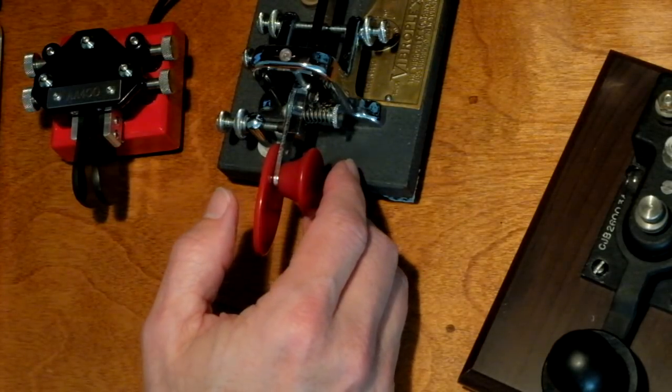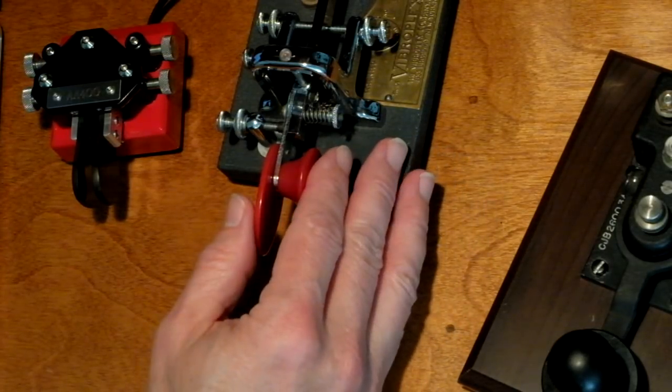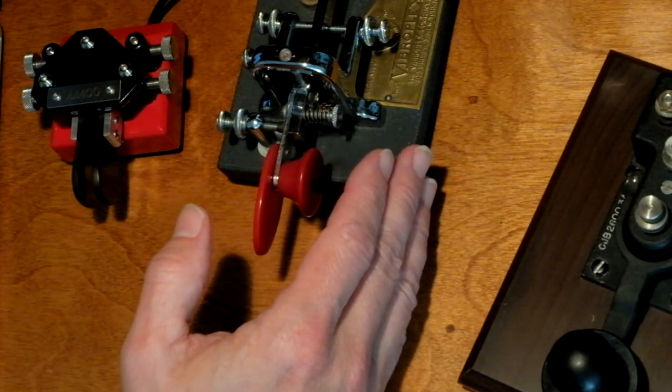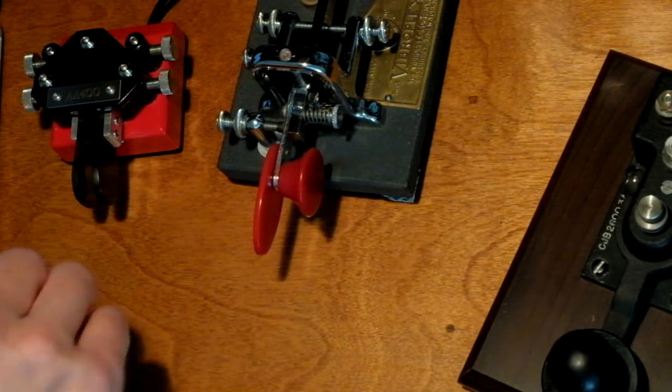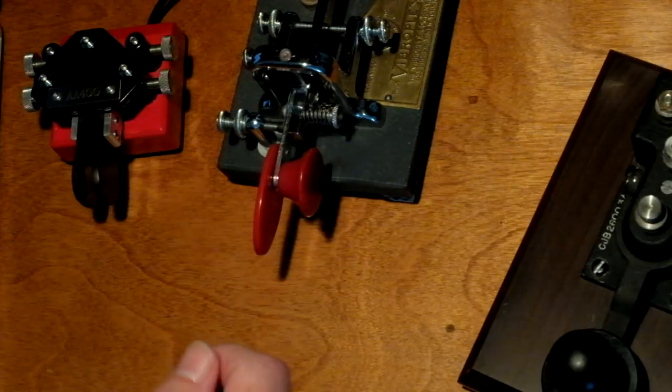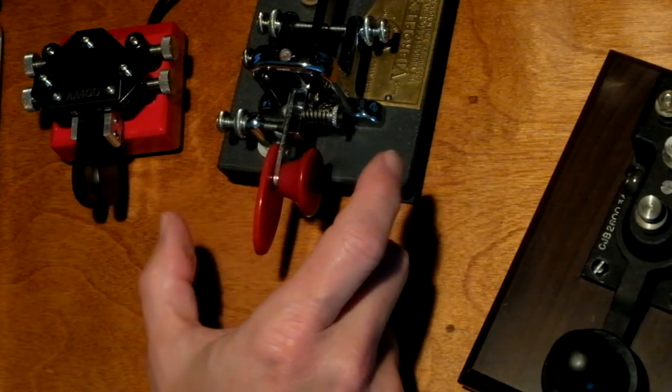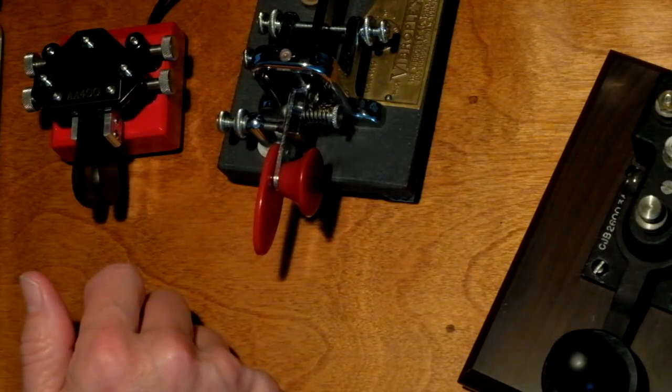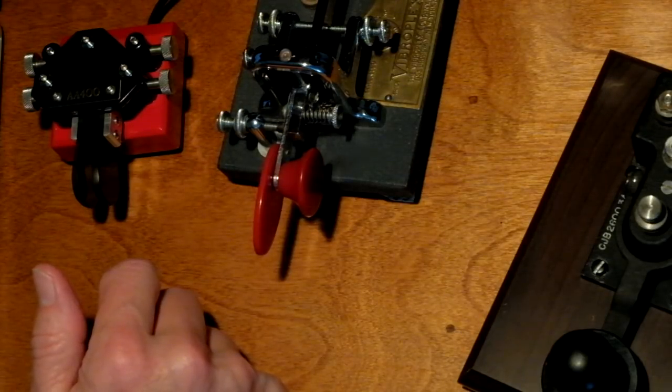So, what's recommended is something called the Farnsworth Method. I don't remember who Mr. Farnsworth was, but the idea was learning the sound of the letters at the target speed that you want to operate, but then keeping the spacing between the letters slow so that your brain has time to process them. So, that was five words a minute. This is about 20 words a minute. For an S. For an H. You might say, Oh, that's too fast. It's too fast for you to count. Yes, and that's good.